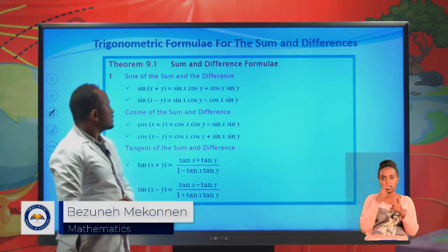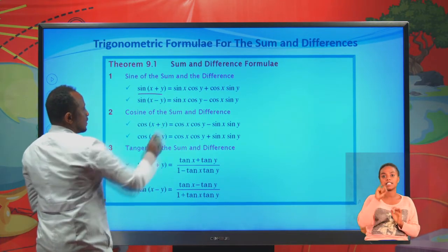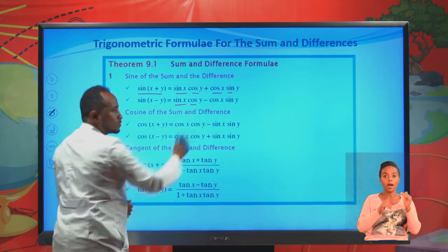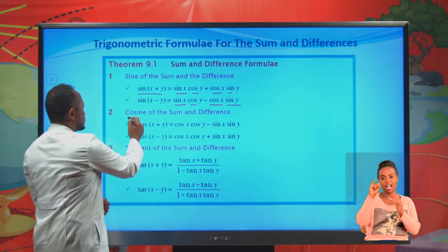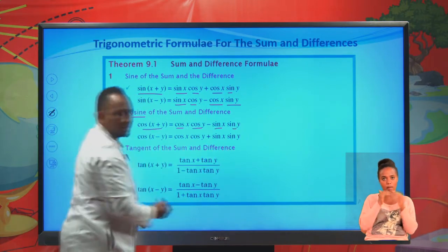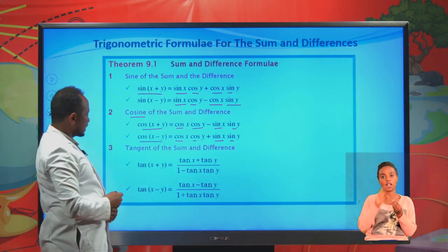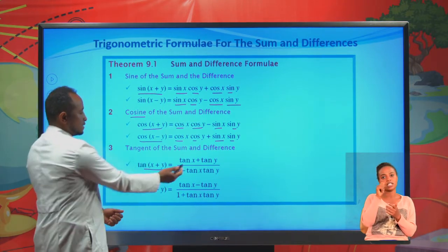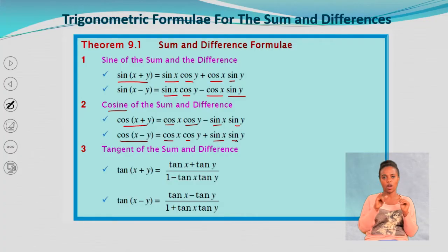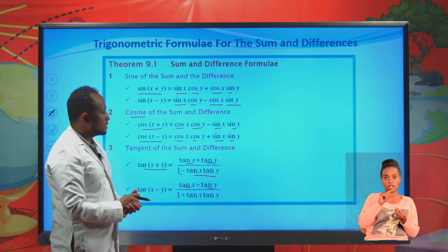Now let's look at the sum and difference formulas for trigonometric functions. Sine of x plus y equals sine x cosine y plus cosine x sine y. Sine of x minus y equals sine x cosine y minus cosine x sine y. Cosine of x plus y equals cosine x cosine y minus sine x sine y. Cosine of x minus y equals cosine x cosine y plus sine x sine y. For tangent: tan of x plus y equals tan x plus tan y over 1 minus tan x tan y, and tan of x minus y equals tan x minus tan y over 1 plus tan x tan y.